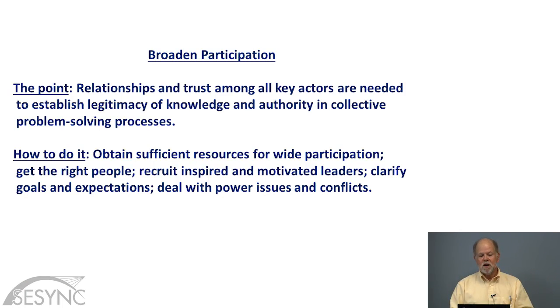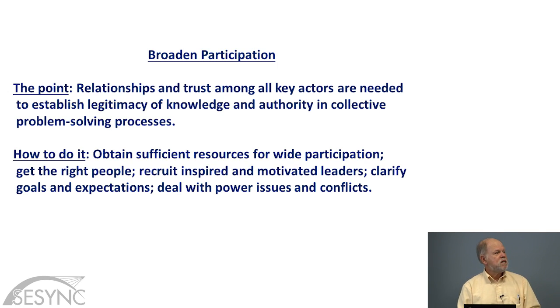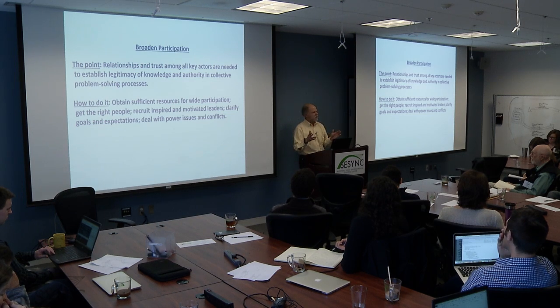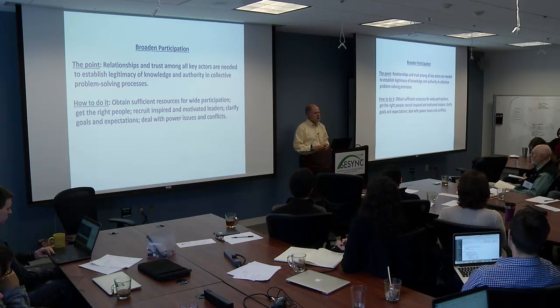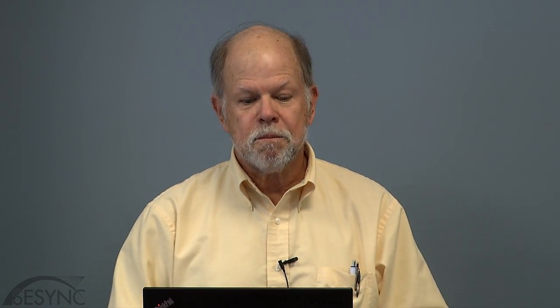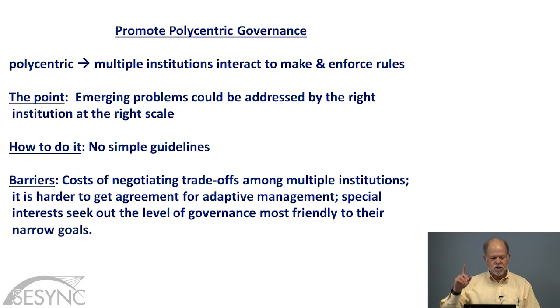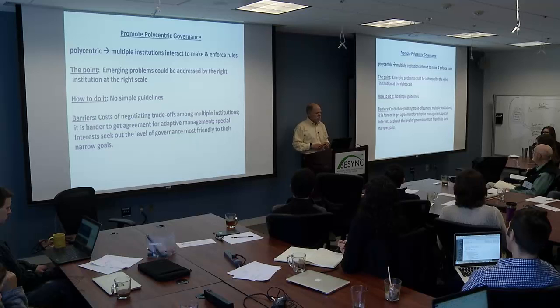Broadened participation — related to heterogeneity, but this is an explicitly social point that you need to build relationships and trust among key actors in the system in order for the system to function effectively, and that involves broadening participation. And the final one is promoting polycentric governance — I've actually read that chapter twice and I don't understand it, so I'm hoping that somebody else talks about that, but it's in the book anyway.